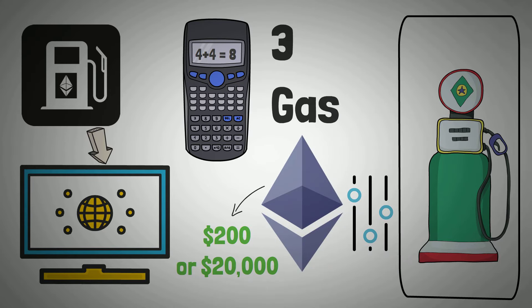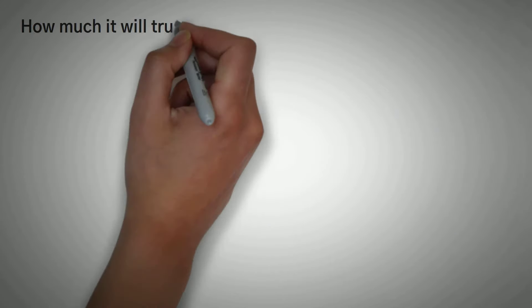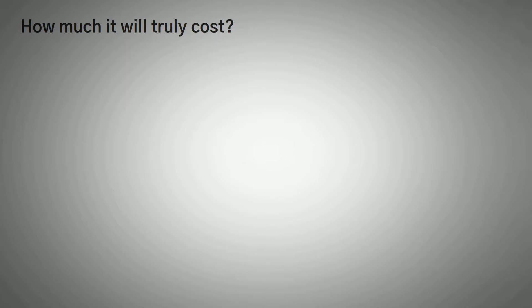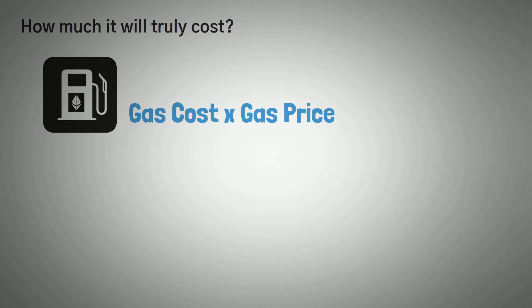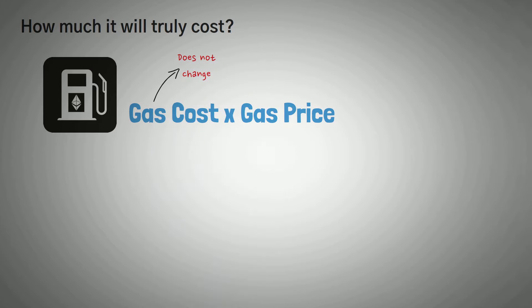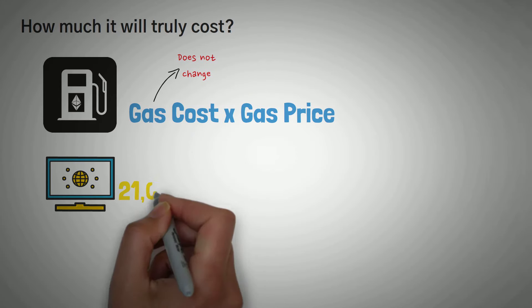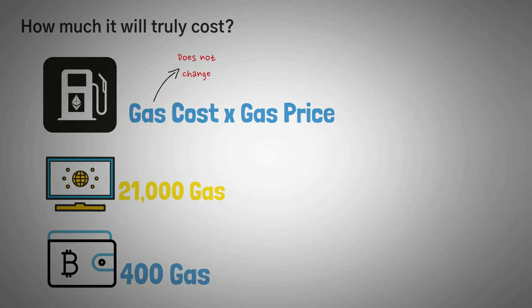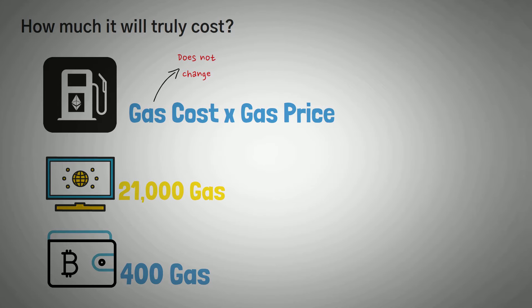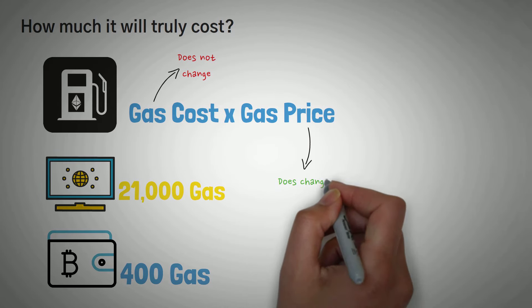One thing we do have to do is convert the amount of gas to the cost of gas. To find out how much it will truly cost, we need to multiply gas cost by the gas price. The gas cost of things doesn't change — it's always 21,000 gas for a transaction or 400 gas to check a balance. But the price of one gas does change, and this is where something called GWEI comes in.